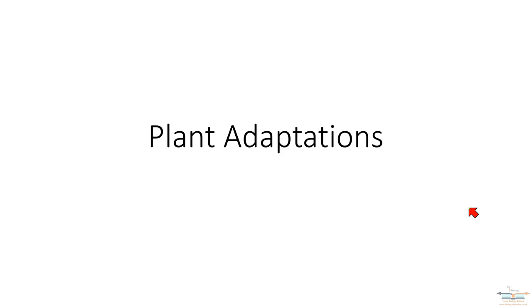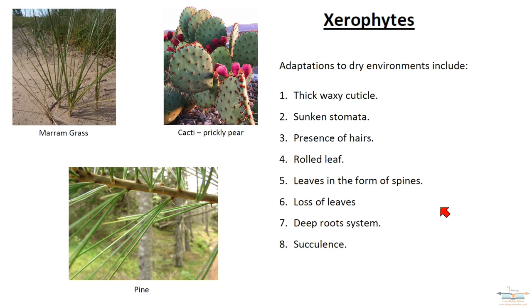Xerophytes are plants that have adaptations that reduce water loss, and they need them because they live in very dry conditions. Many people think they only live in dry, hot conditions, but that's not the case. You can get plants with xerophytic features that live in cold conditions because water is locked up in ice or snow and is not available to the plant. Here are three examples of xerophytes: marram grass, cacti, and the pine tree.